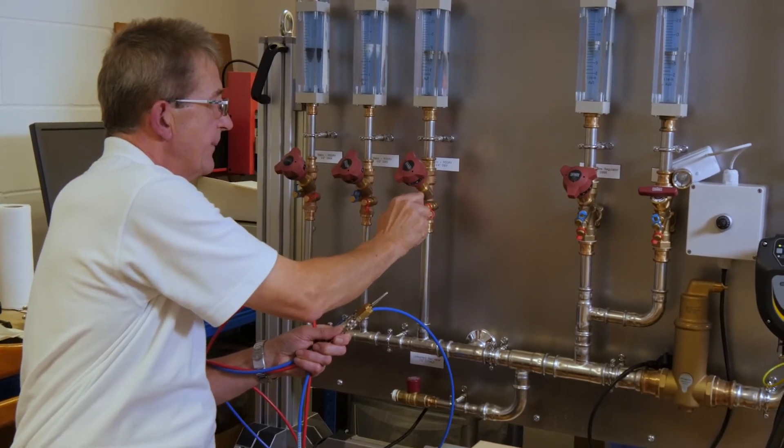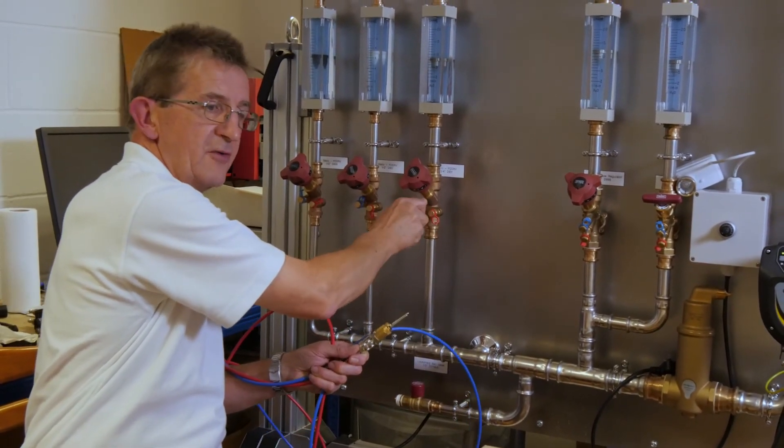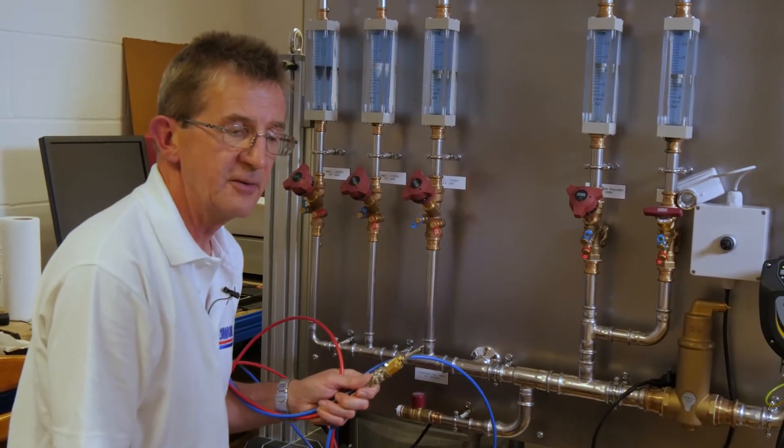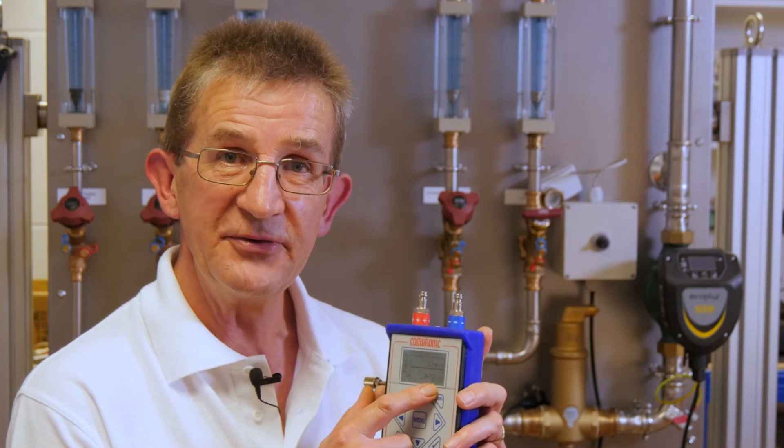And once that's done we can then move on to the next valve for commissioning. So hopefully today with this short video we've been able to show you how easy it is simply by following the nine stages shown on the front of every AC6: how to connect, disconnect, take a differential pressure reading and measure flow rate through a balancing valve.